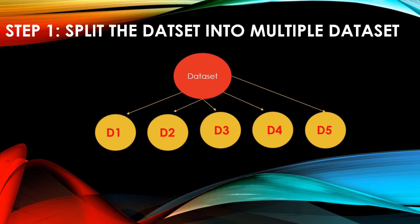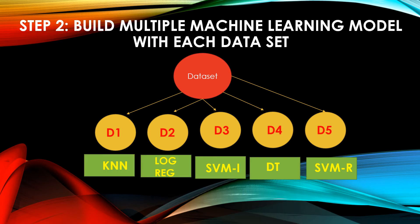Next step is step 2. Build multiple machine learning models with each dataset. Now we have first divided our dataset into D1, D2, D3, D4, D5.